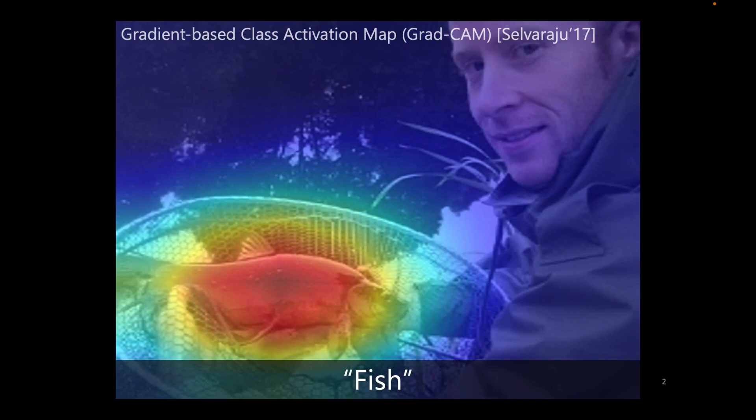When working on clean images, we consider the saliency map as unbiased, since it can highlight correct pixels, which enhances the model's transparency and improves human trust.